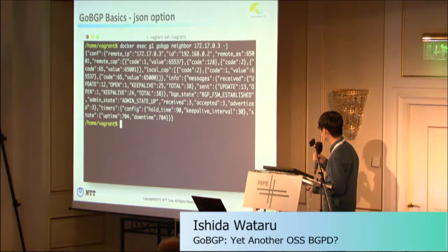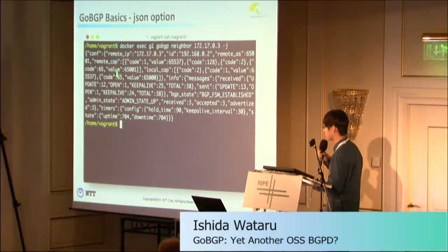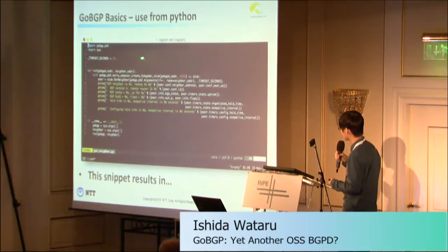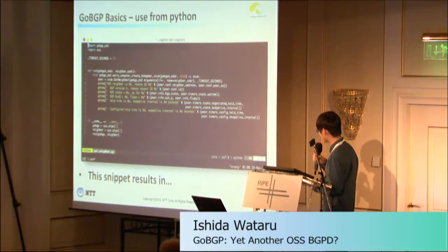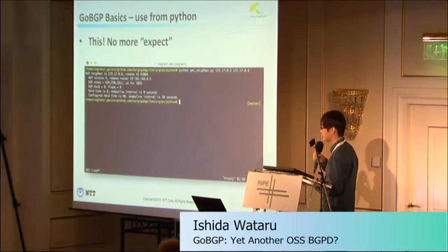If you pass a hyphen-J flag, the output will be in JSON format, so it is easy to parse. And even more, if you write a snippet like this in Python, when you run this snippet, the result is clean output. You don't need any expect library, error handling is much easier.